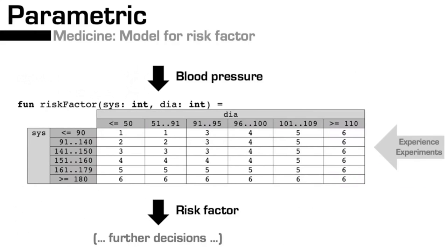Another example of a very simple parametric model comes from medicine. I built an application in the healthcare domain where, for example, from the systolic and diastolic blood pressure, depending on the ranges therein, you calculate a risk factor, which you then use together with the age and weight of the patient to make further decisions regarding treatment.